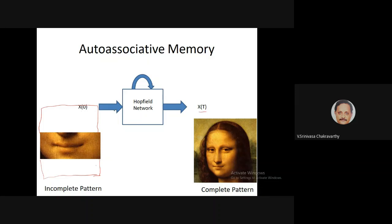You give the network an input which is a partial pattern — think of it as an initial condition. The partial pattern is an incomplete version where only part of the information is filled and the rest is zeros. Call this x₀ — the image at the 0th iteration. The Hopfield network processes it multiple times: x₀ becomes x₁, x₁ becomes x₂, and so on.